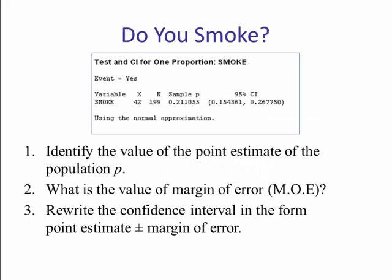Now this is our last example. We are given a confidence interval in Minitab. This is coming from the student survey data, and the question is, do you smoke? Our x is going to be how many people indicated yes they do smoke. So the first thing we are going to do is identify the point estimate for the population P. Then we are going to find the margin of error, and then we are going to rewrite this confidence interval as a point estimate plus or minus margin of error.